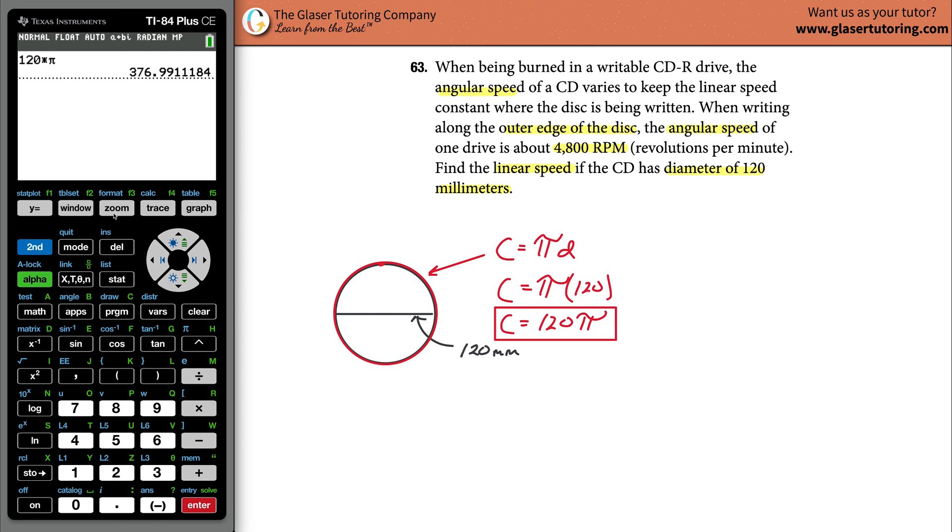I'm going to leave it in terms of the exact number here. So now that we know the length, we have to figure out how far does it travel if it makes 4,800 revolutions every single minute. Actually, not how far it does travel, but we want to find its linear speed.